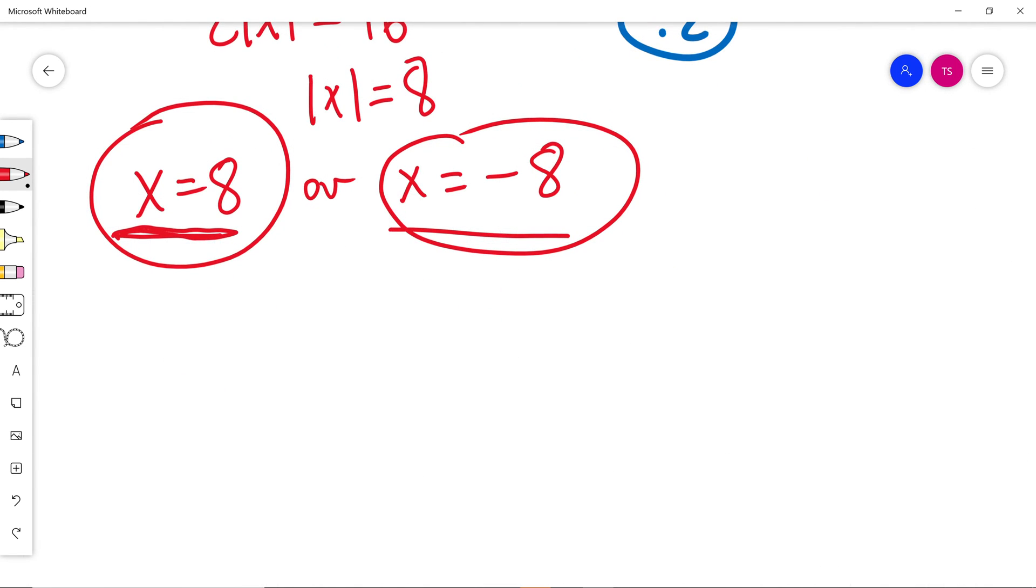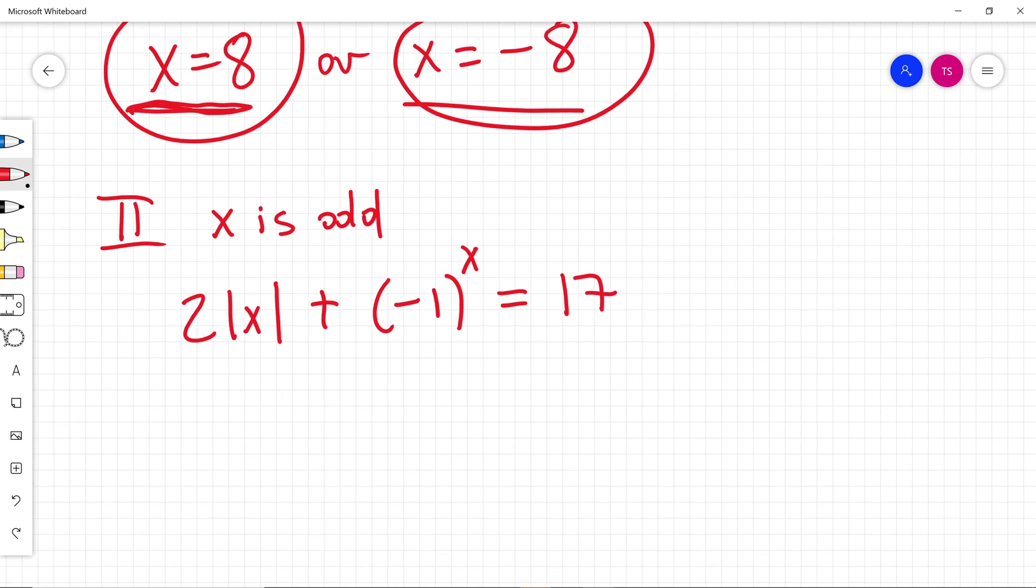Second step, I will solve this problem when x is odd. My equation was 2 times absolute value of x plus negative 1 to the power of x. This is equal to 17. Now x is odd.